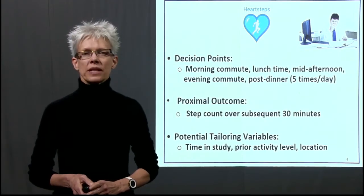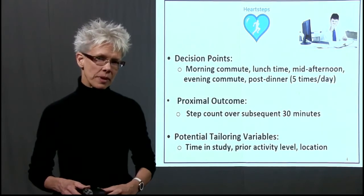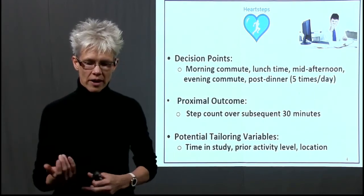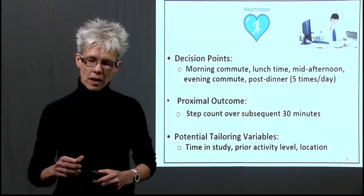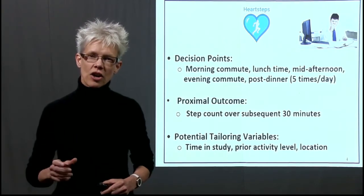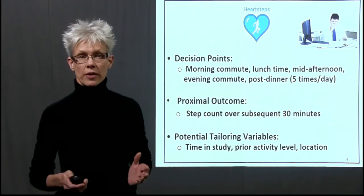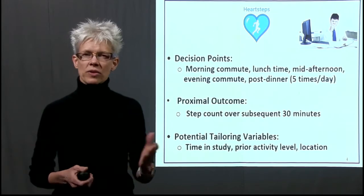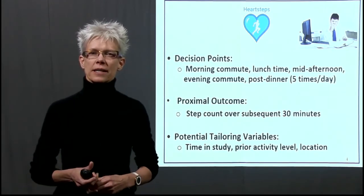What were the decision points? Originally we thought the decision points would be every minute, but when we had access to large amounts of data from people wearing the wristband, we realized that people with regular jobs showed the greatest within-person variance in step count around one of five times a day: right before the morning commute, around lunchtime, mid-afternoon, right around the evening commute, and post-dinner — approximately two and a half hours between each decision point. That's why we settled on these five decision points.